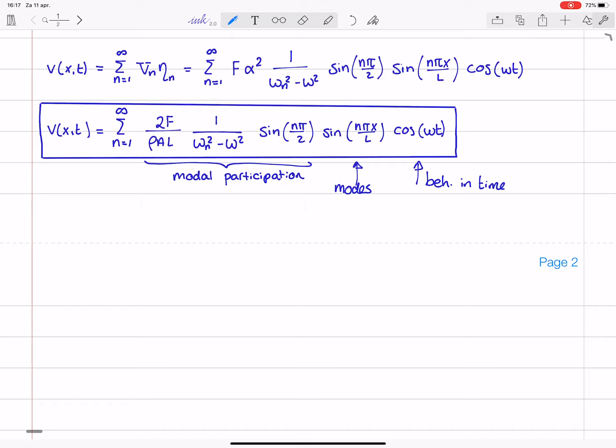you can see that for natural frequencies that are much higher than this excitation frequency this denominator will be a large number so also here you see that this denominator is the smallest for natural frequencies that are close to the excitation frequency so these modes will contribute most to the solutions. Frequencies that are way lower or way higher